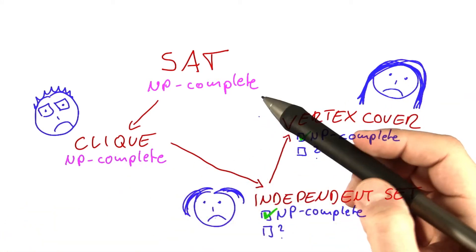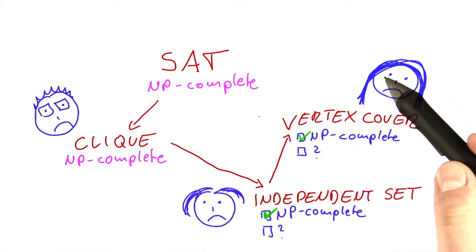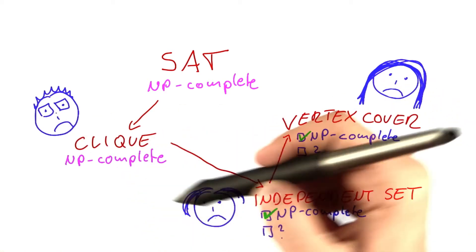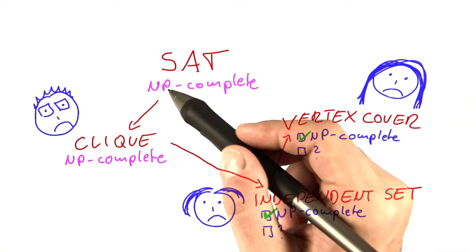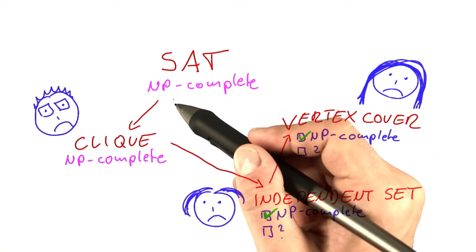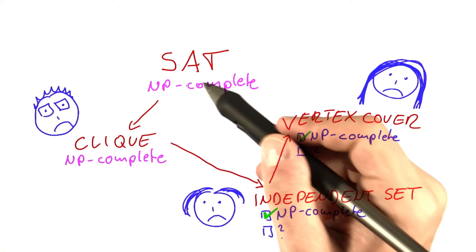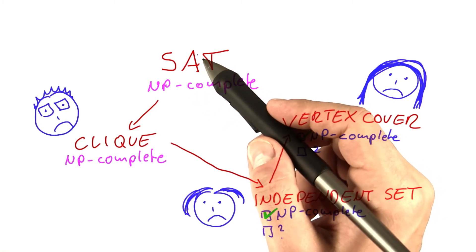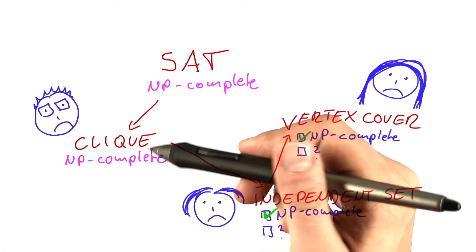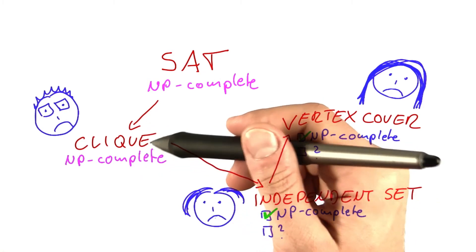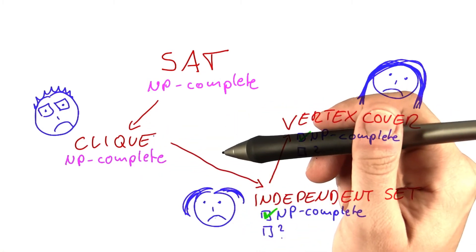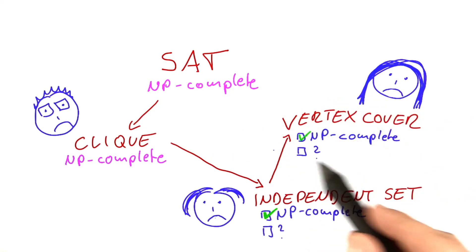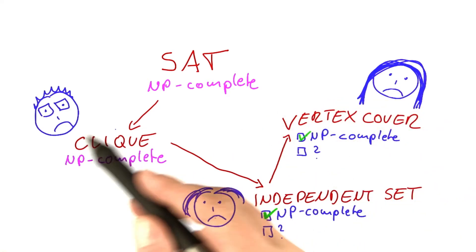And what this means is the following: The problems that Alice, Bob, and Carol are trying to solve are as hard as any problem in NP can become. Any problem that you could solve in polynomial time if you had this magic if-better function available would also be solvable in polynomial time if we found a polynomial time algorithm for any of their problems.